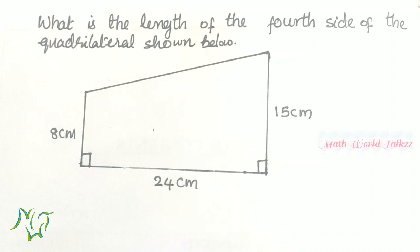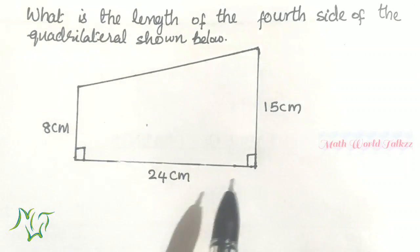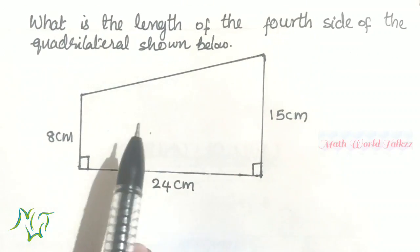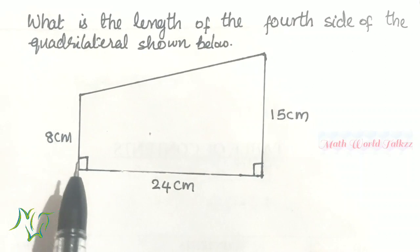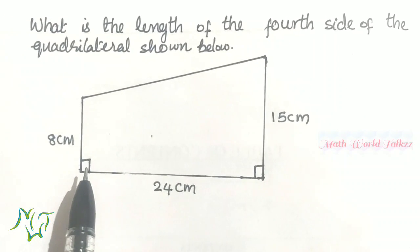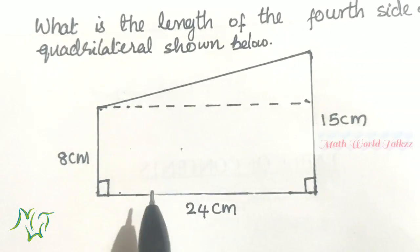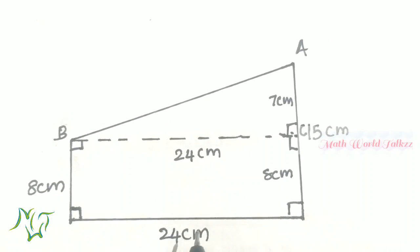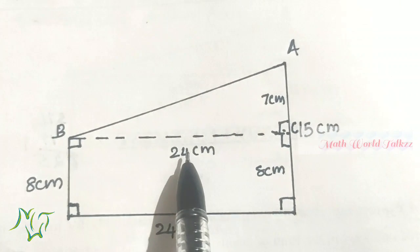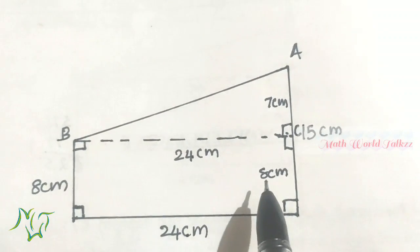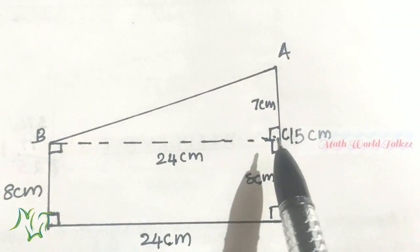Our first question is: what is the length of the fourth side of the quadrilateral shown below? A four-sided closed figure is called a quadrilateral. Here the fourth side is missing. It is given that there is a 90-degree angle. I have drawn a line parallel to the side of 24 centimeters, so we get a rectangle. Opposite sides are equal — 24 here and also 24 here, 8 centimeter here and also 8 centimeter. We want to find side AB.